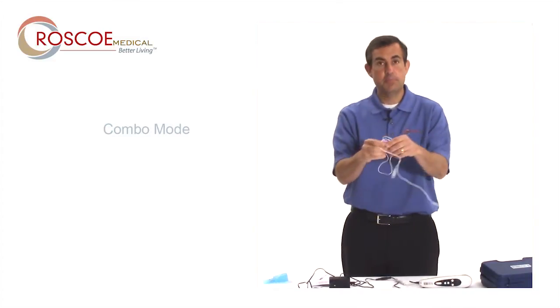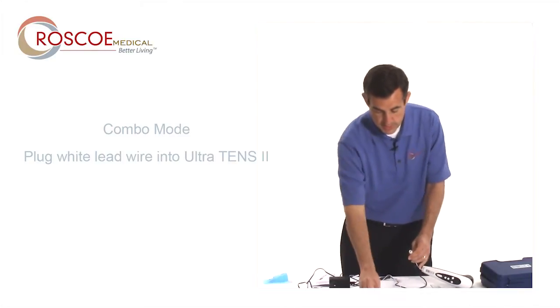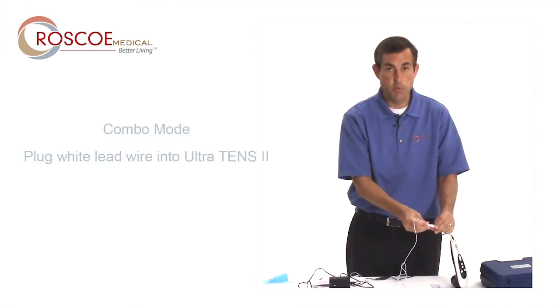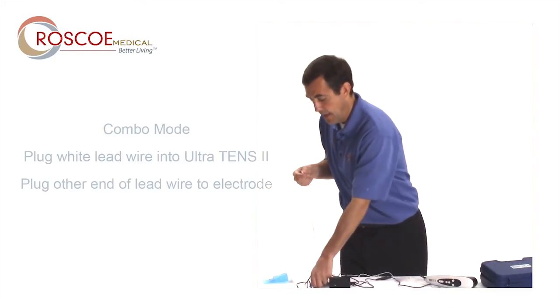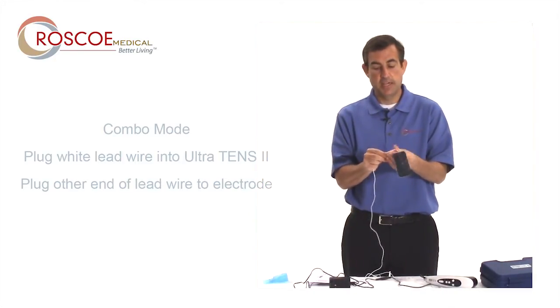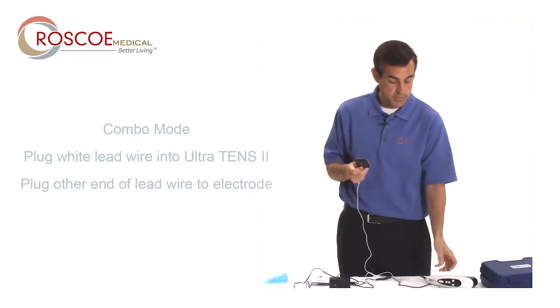For that mode, I take this white lead wire. I plug one end into the white lead wire that comes out of the Ultra TENS II. I plug the other into the lead wire, the electrode itself. This is how I use combo.